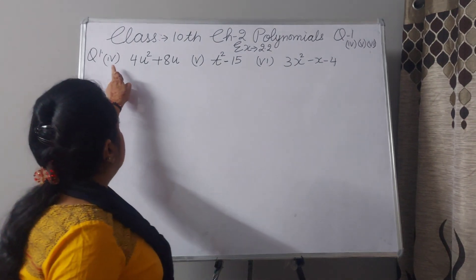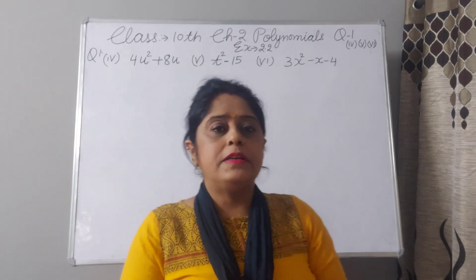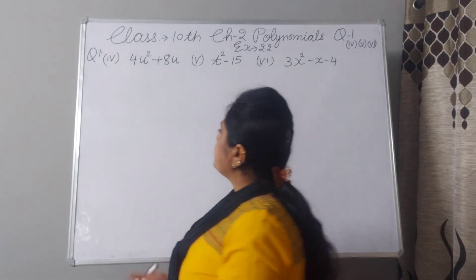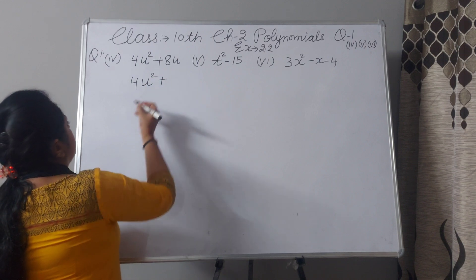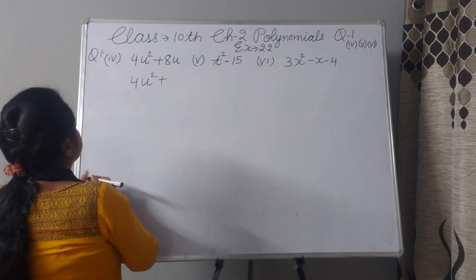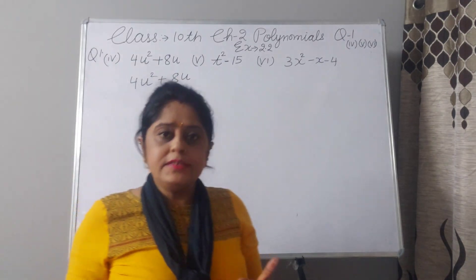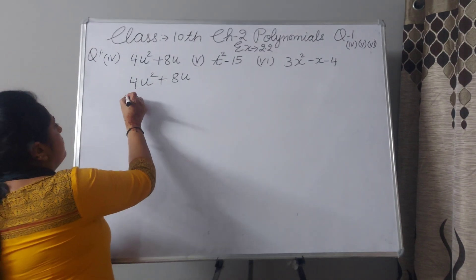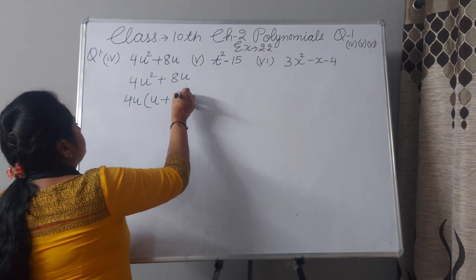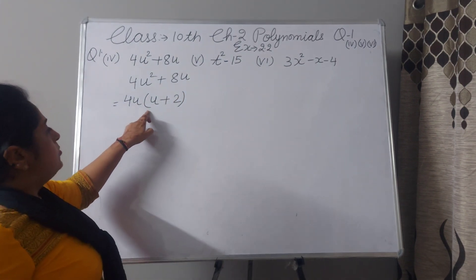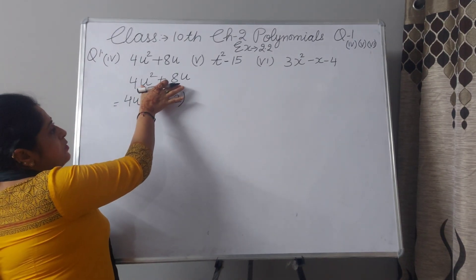Now, question number 1, 4th part. We have to tell the relationship between zeros and coefficients also. The polynomial is 4u square plus 8u. First, we will make the factors. We can take 4u common, giving us 4u into u plus 2.